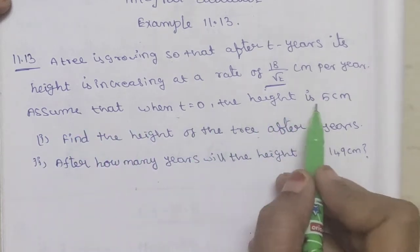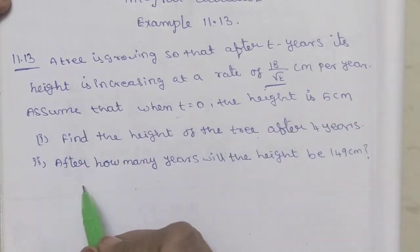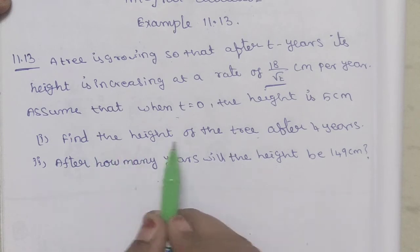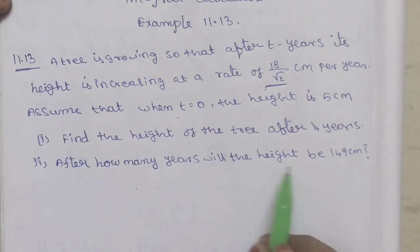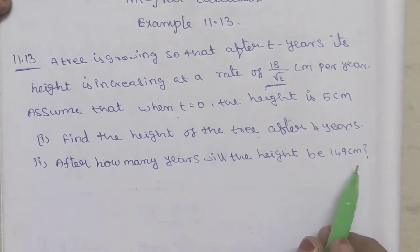Assume that when T equals 0, the height is 5 cm. To find the height of the tree after 4 years, and after how many years will the height be 149 cm.